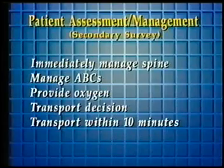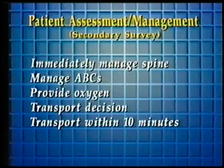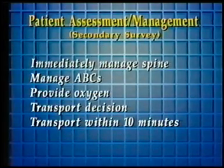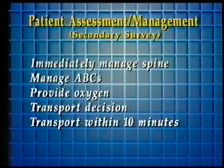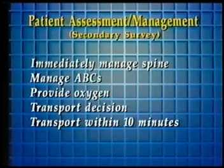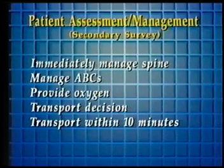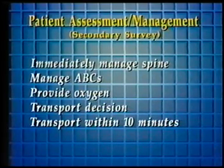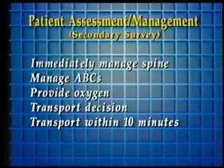Key points for successful completion of this station are to first immediately establish and maintain spinal precautions. Locate, evaluate and manage all conditions which compromise the airway, breathing and circulation before attending to other injuries. Provide a high concentration of oxygen if appropriate. Differentiate patients needing immediate transportation from those needing continued scene survey. Transport the patient within the 10 minute time limit. Finally, be sure to specify transportation early for any critically injured trauma patient.